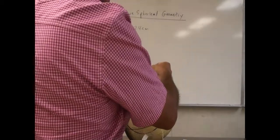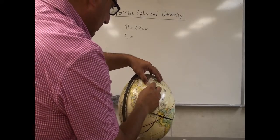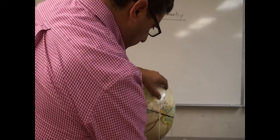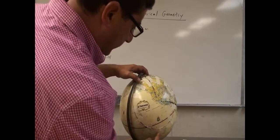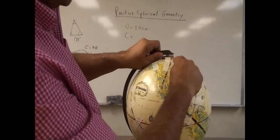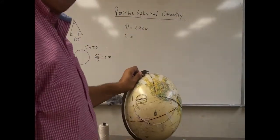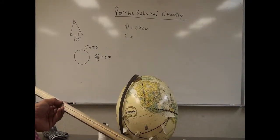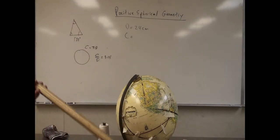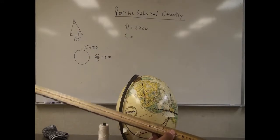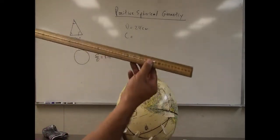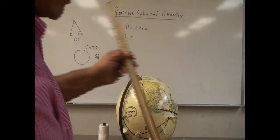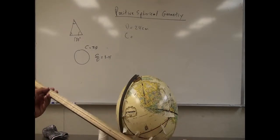Then I tape a string all the way around the circumference of the circle. You can see I've gone all the way around; the string is as circular as I could make it. I'm going to cut the string and find the circumference. Starting at the 20 centimeter mark and stretching it out, it ends around the 88.5 centimeter mark. Since I started at 20, I subtract 20 from 88.5, giving 68.5 centimeters as the circumference.